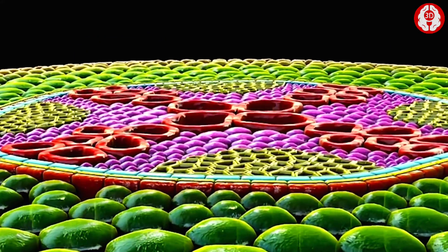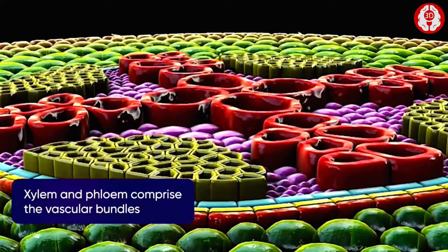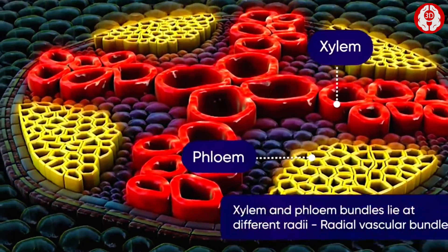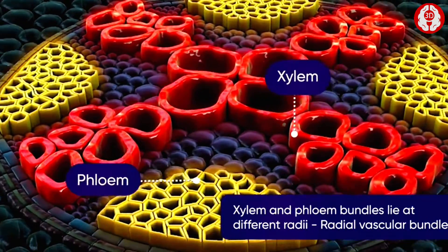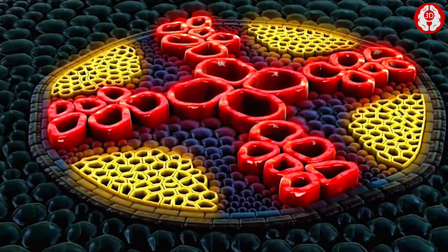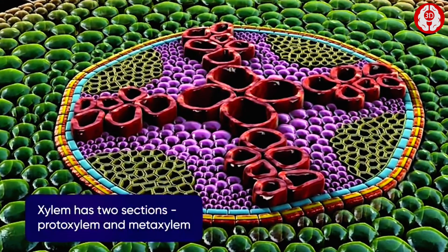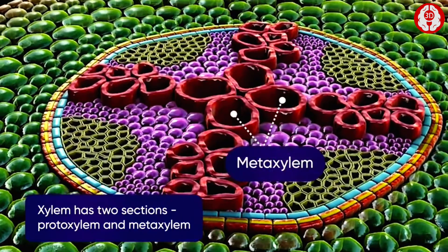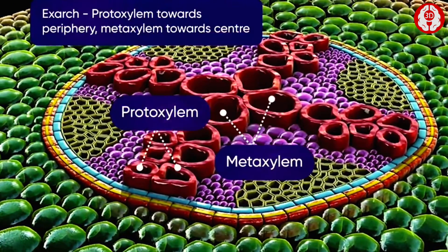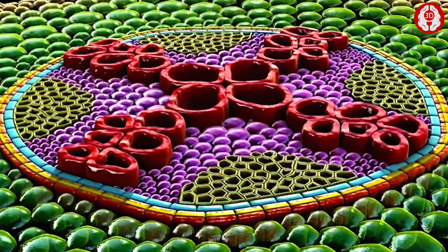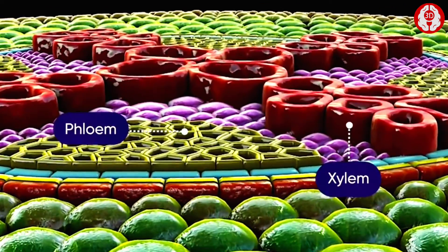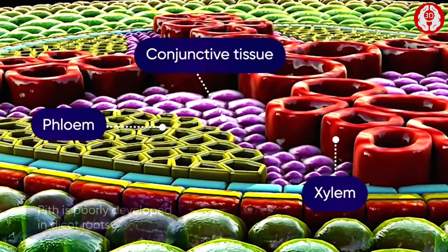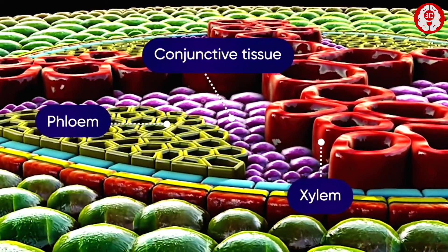Embedded in the parenchyma cells of the ground tissue are the vascular bundles consisting of xylem and phloem. The xylem and phloem lie at different radii. The xylem has two sections: the proto-xylem is towards the periphery and the meta-xylem occupies the inner position. This arrangement is known as exarch. The xylem and phloem are separated from each other by a few parenchyma cells called conjunctive tissue, which is a part of the ground tissue.